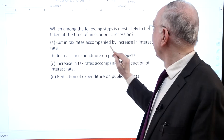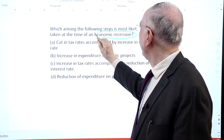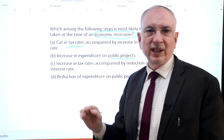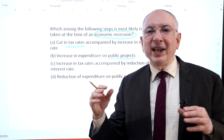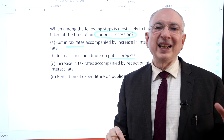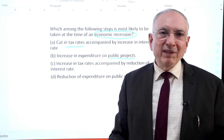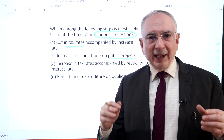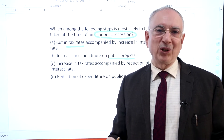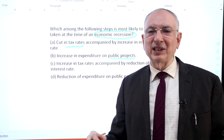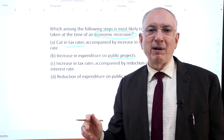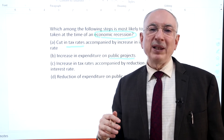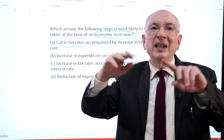The key points here are economic recession, interest rate, tax rates, and public projects expenditure. Recession is a situation characterized by a negative growth rate of GDP in two successive quarters. Some indicators of a recession include slowdown in the economy, fall in investment, and fall in the output of the economy. It is prudent for the government and the central bank to follow expansionary fiscal and monetary policy respectively to stimulate the economy. Increase in expenditure on public projects is one of the tools to stimulate the economy during recession, as it triggers the virtuous cycle of investment, leading to increase in GDP and income, and in turn increasing demand.